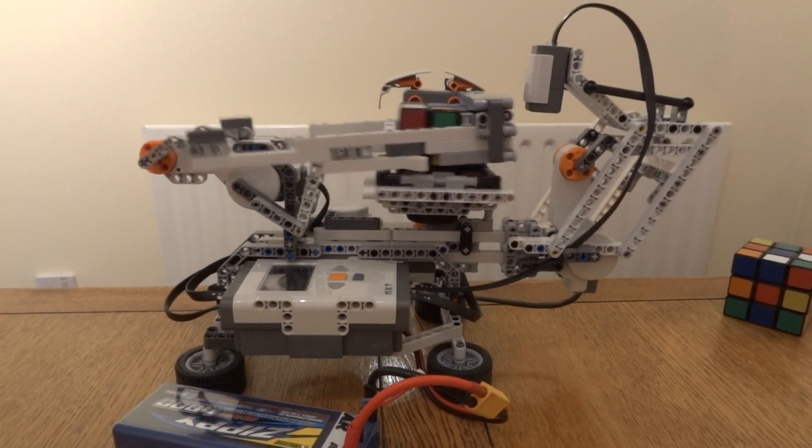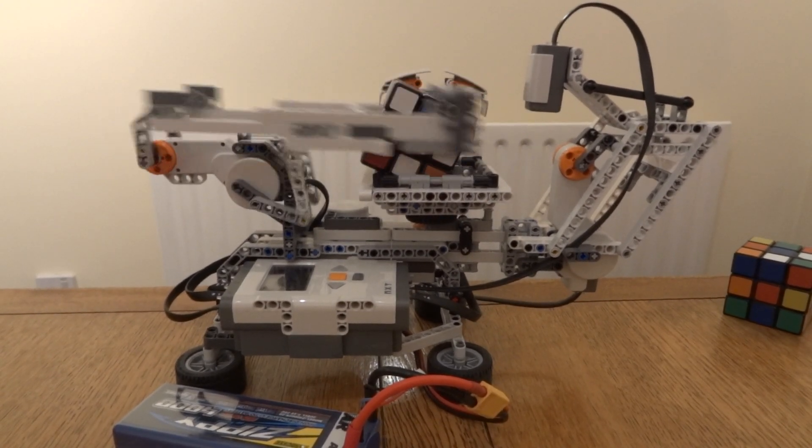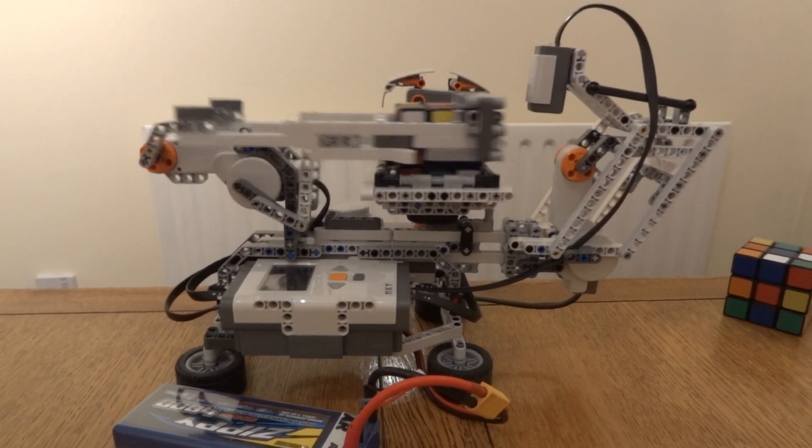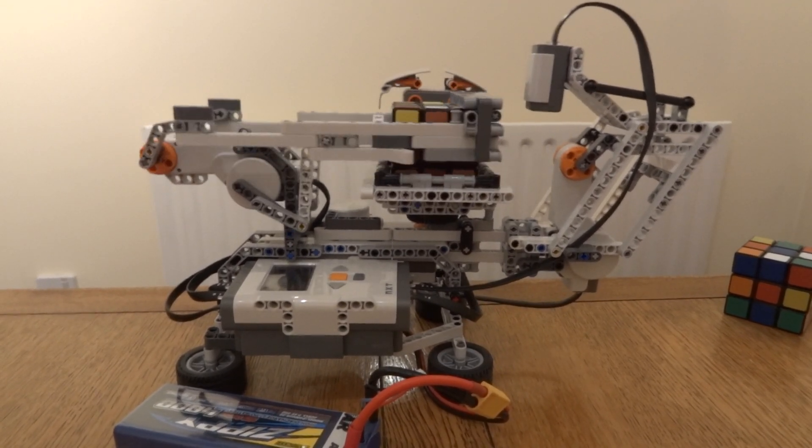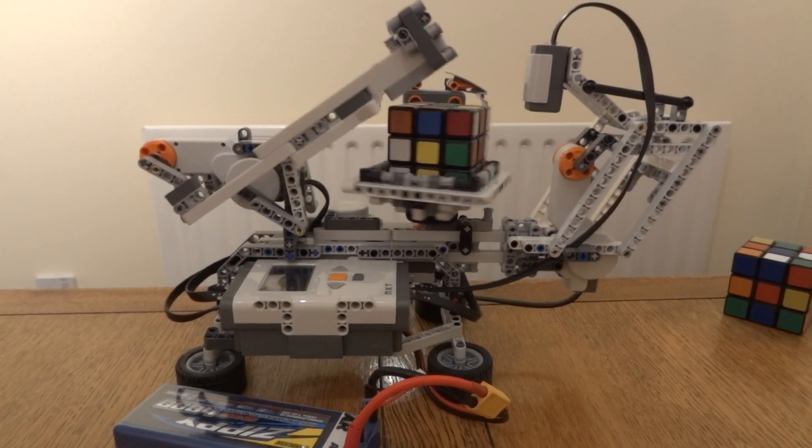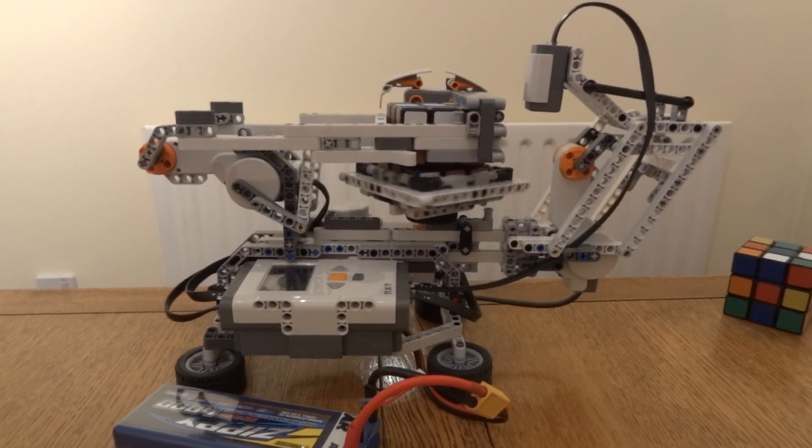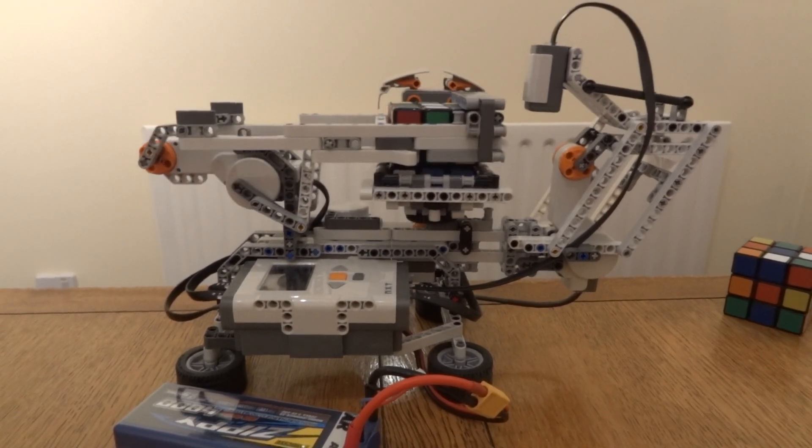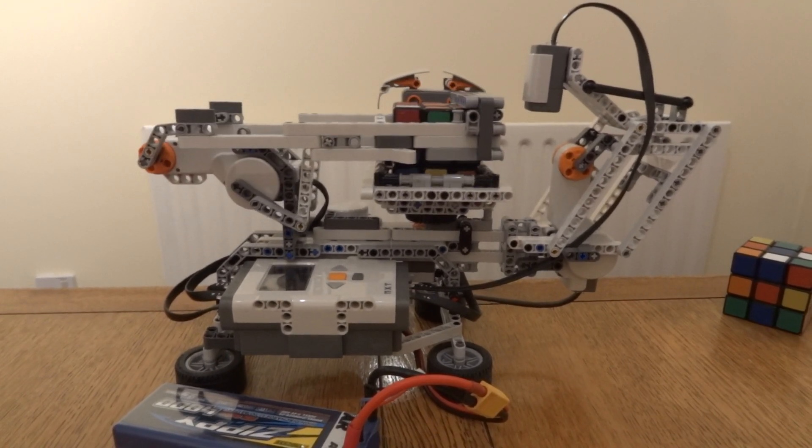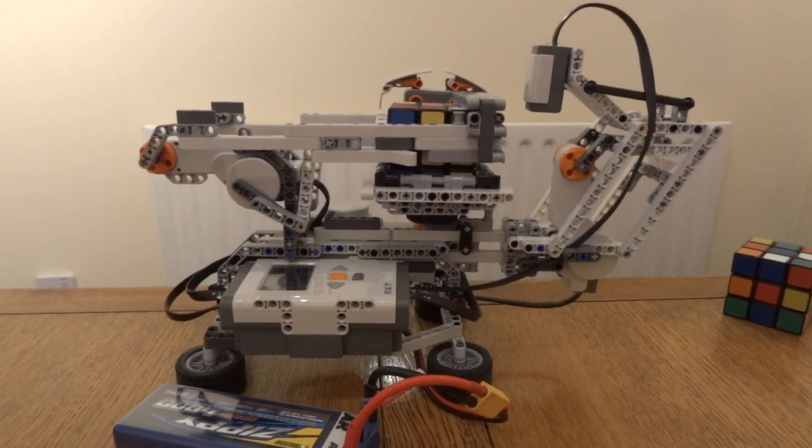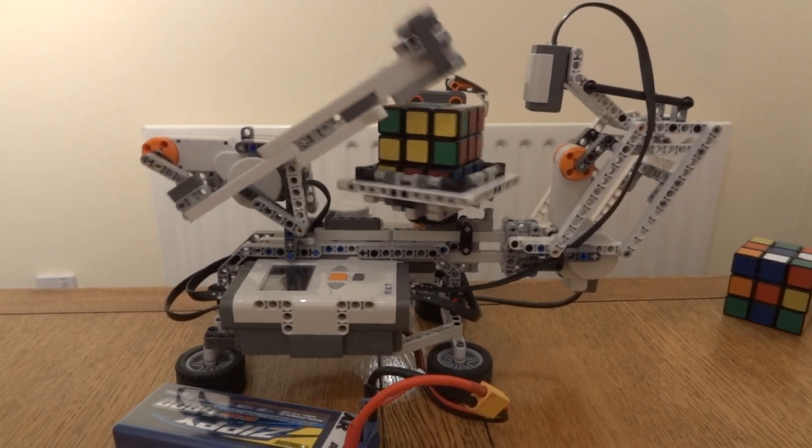the only thing it can do is turn the turntable round while holding the upper two layers. So to twist any particular side it first has to turn the cube over. Now you can see, the solving process is a mixture of rotating the whole cube and twisting the bottom layer.